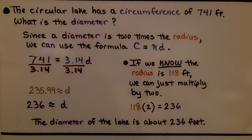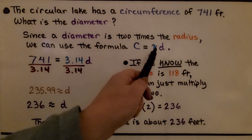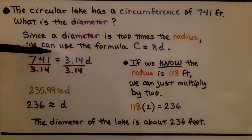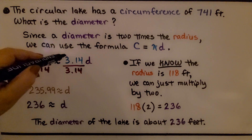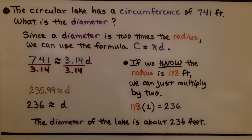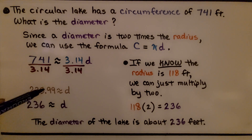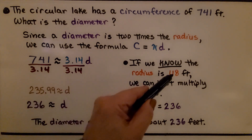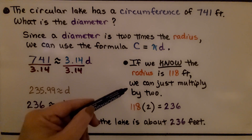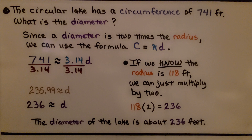The circular lake has a circumference of 741 feet. What is the diameter? Since the diameter is 2 times the radius, we can use the formula C equals πd. We know 741 is the circumference, so 741 is approximately 3.14 times d. We divide both sides by 3.14 and get approximately 235.99 for the diameter, which we round up to 236 feet. We can also confirm this: since the radius is 118 feet, multiplying by 2 gives 236 feet — the diameter straight across the lake.